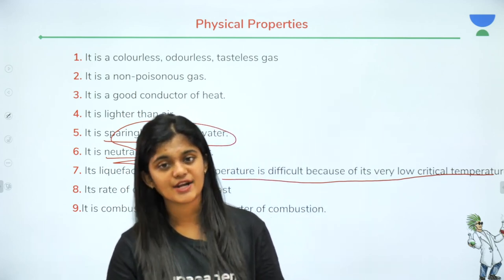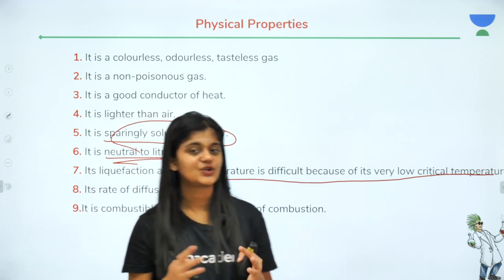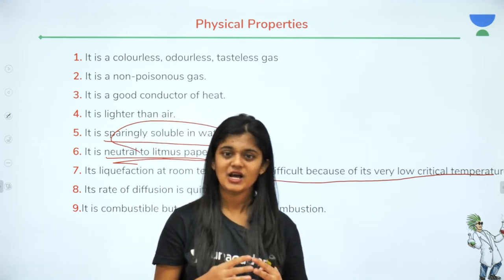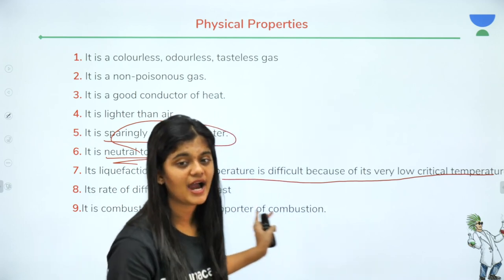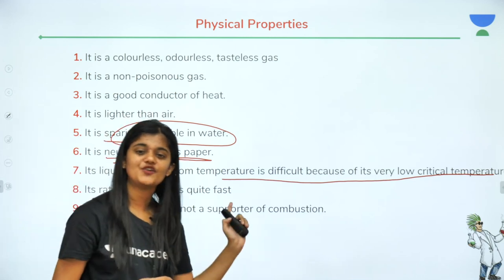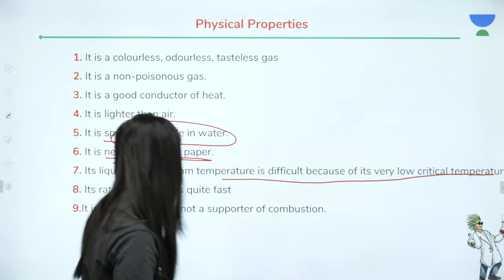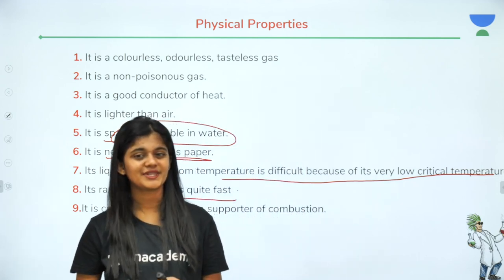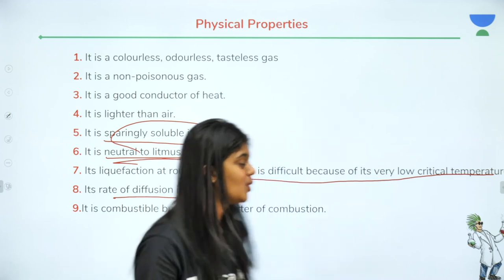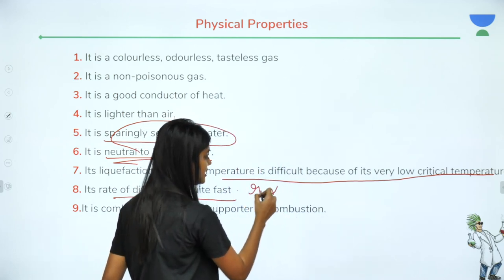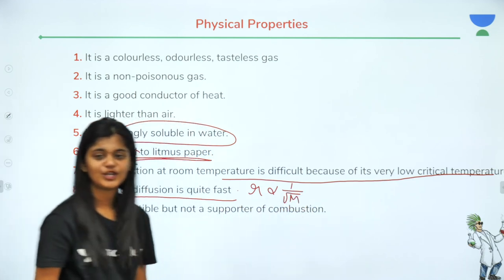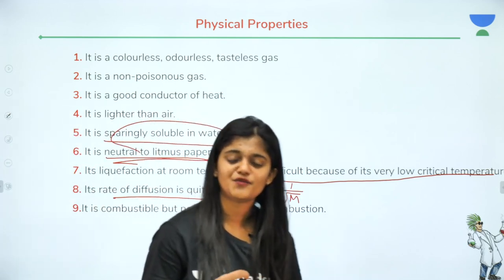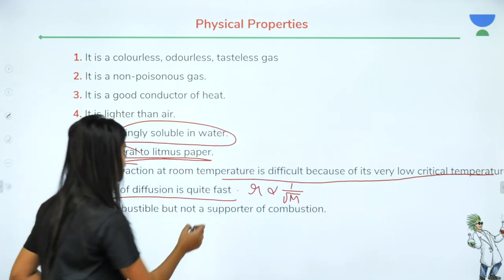We can liquify carbon dioxide quite well using supercritical fluid methods, but liquefaction of hydrogen is difficult due to its very low critical temperature. Eighth: its rate of diffusion is quite fast. Graham's Law of Diffusion tells us that rate of diffusion is inversely proportional to the square root of the molecular mass. Since hydrogen is the lightest element, its rate of diffusion is fast. Ninth: it is combustible but not a supporter of combustion.